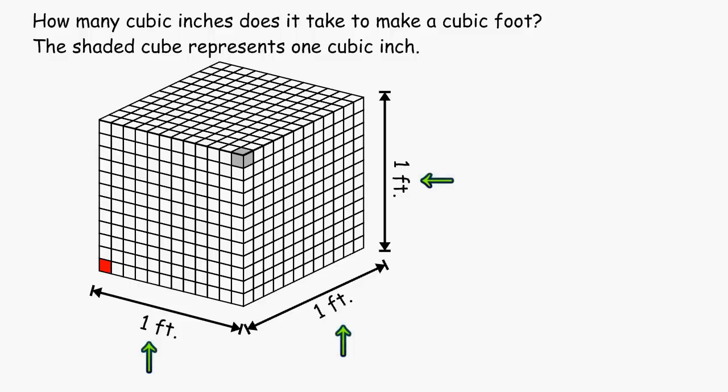But let's take a look at the first dimension, the length. We could fit 12 cubic inches side by side to equal the distance of one foot.